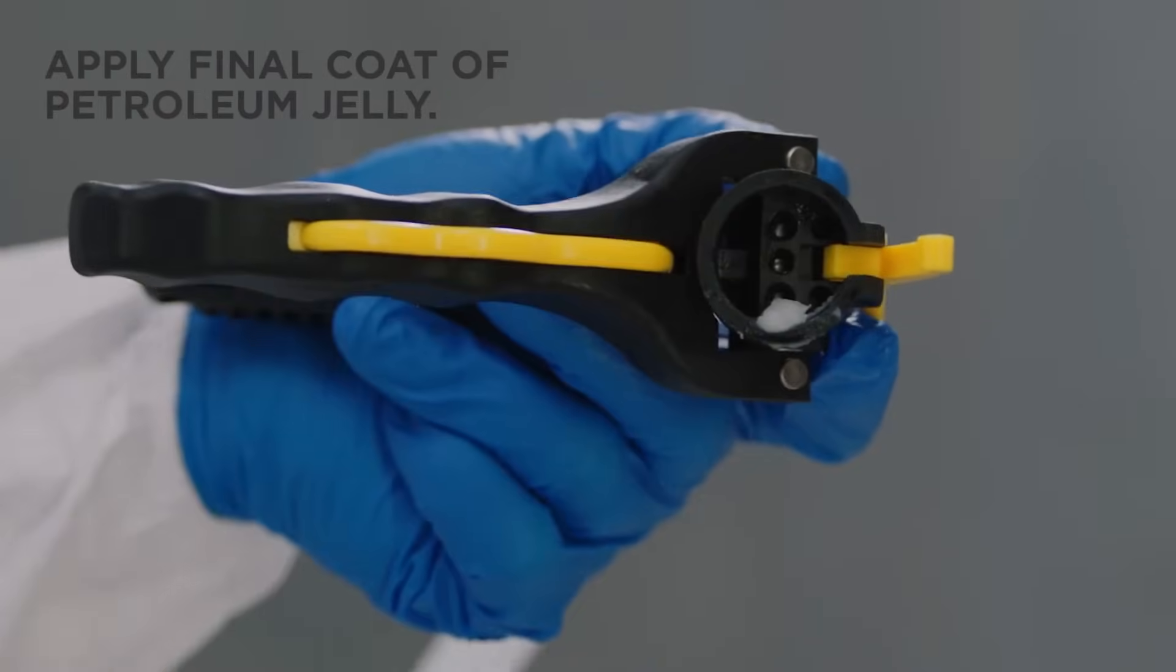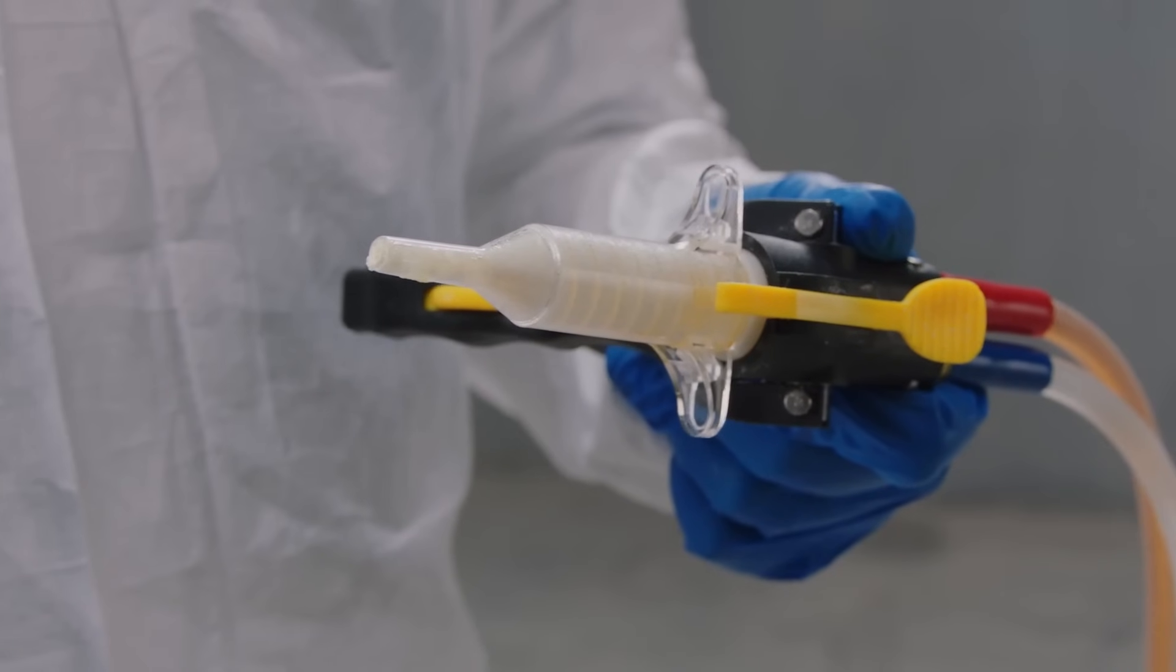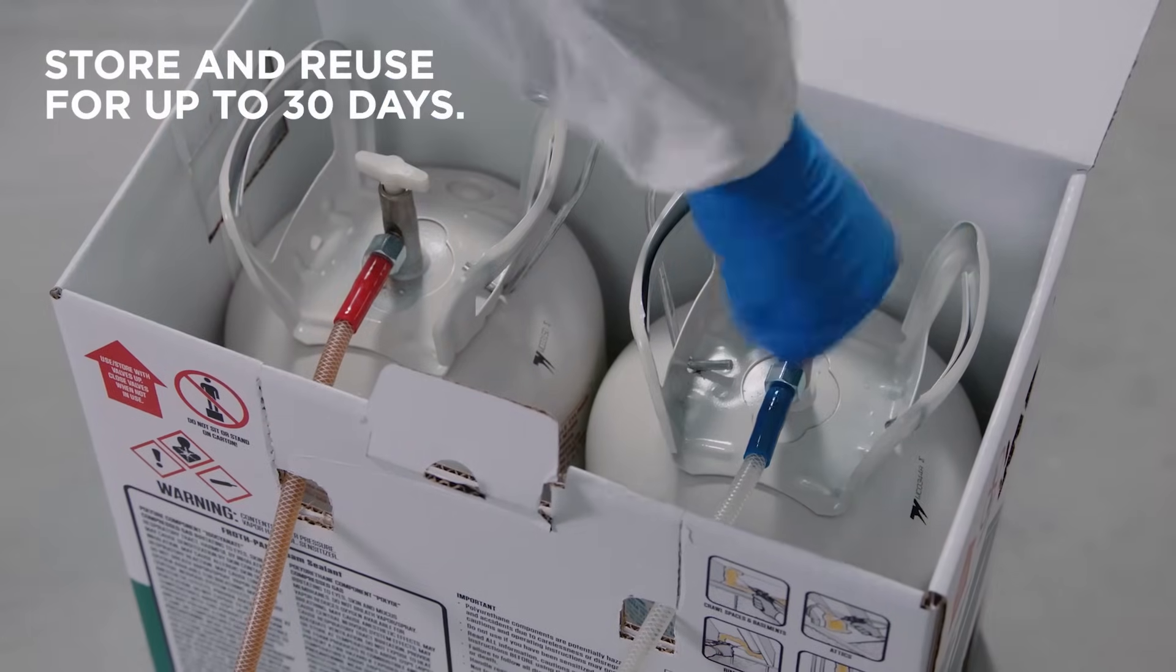Then, reapply one last coat of petroleum jelly and firmly reinsert the used nozzle once more. Close both cylinder valves and store.